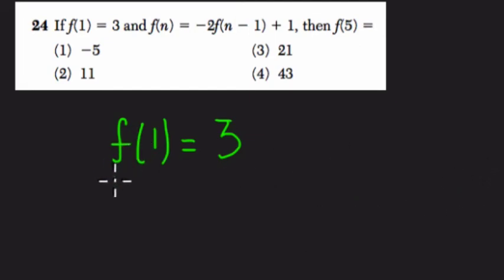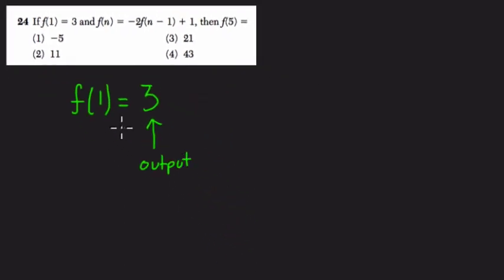Well, f of 1 means some kind of function has an output of 3. This is our output here because the output is equal to f of 1, and the input is 1. They tell us the input is this number right here.